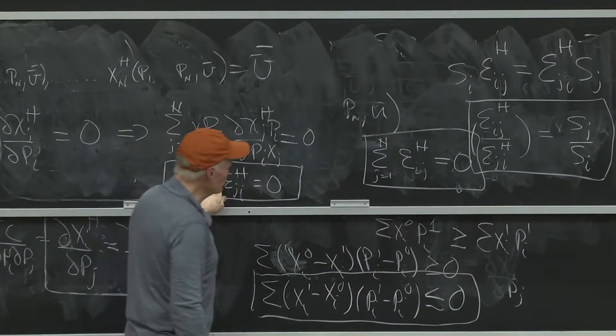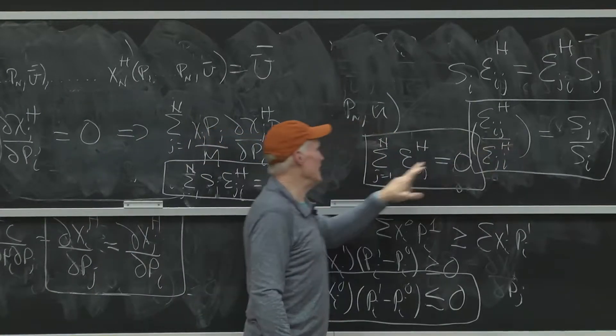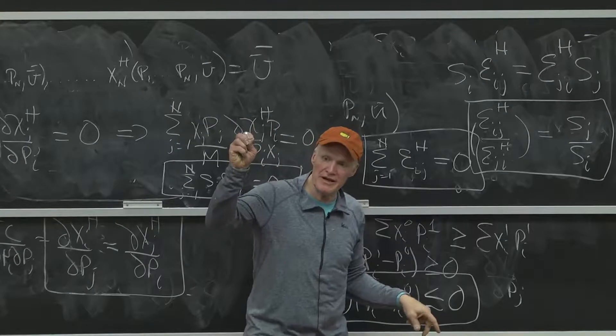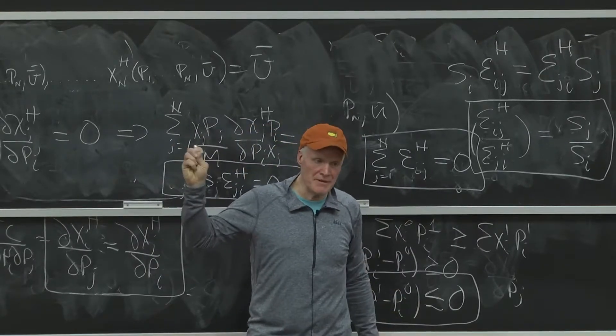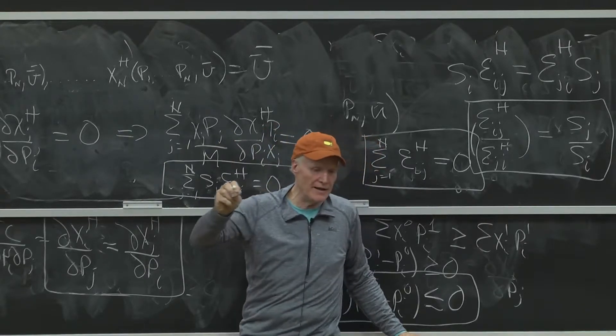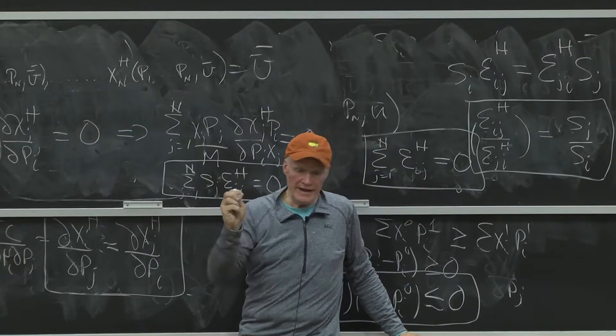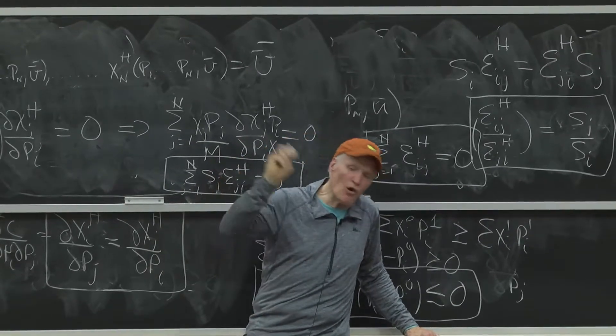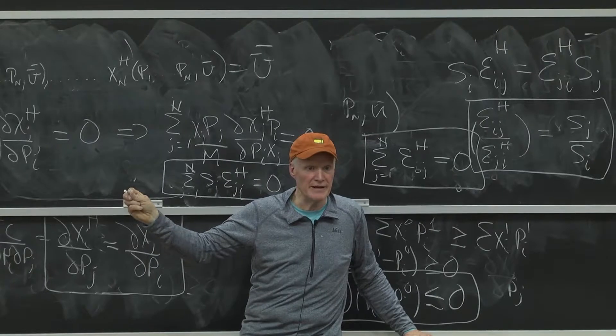And if I know this one and this one, it automatically gives me that one. So if my demand system satisfies symmetry and homogeneity, it'll automatically satisfy adding up. And if it satisfies adding up and symmetry, it'll automatically satisfy homogeneity.